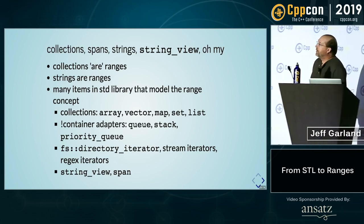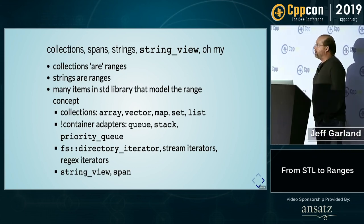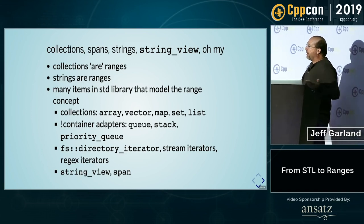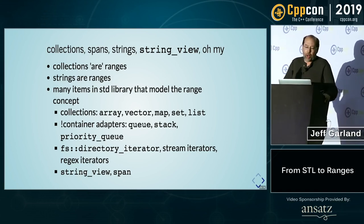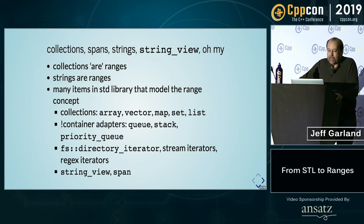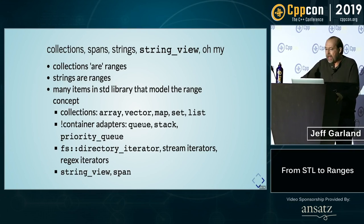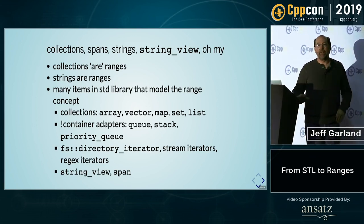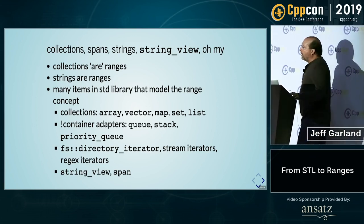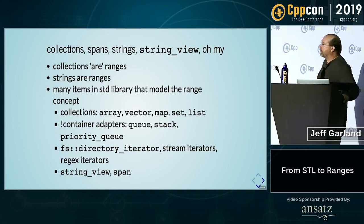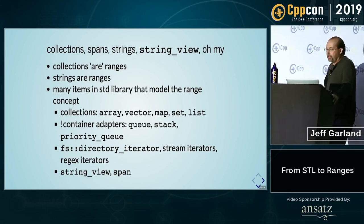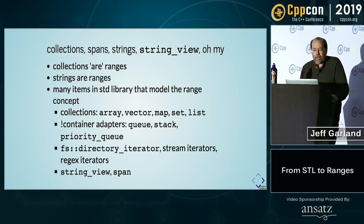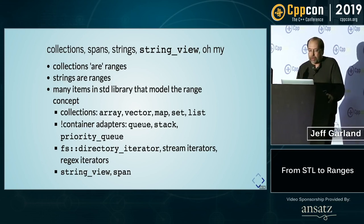Let's look at some concrete examples. Collections are ranges. Strings are ranges — they're sequence containers. And many other things in the standard library are ranges: your arrays, vectors, maps, sets, and lists can all be ranges. The container adapters are not ranges, because they don't have a begin and end and you cannot iterate over them. Other things like directory iterators, stream iterators, and so forth can be ranges. And then we'll talk a little bit about string_view and span.